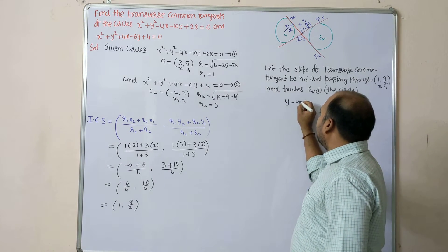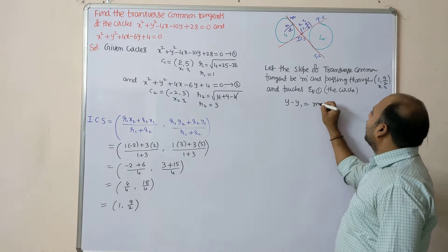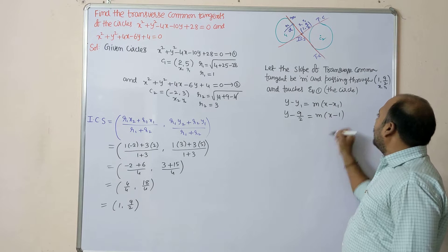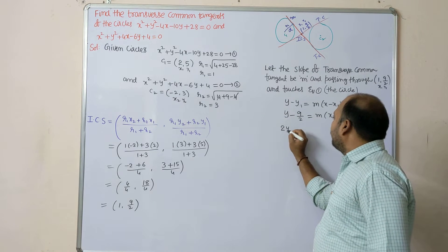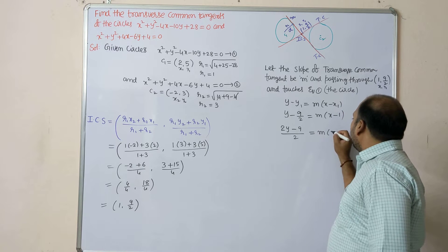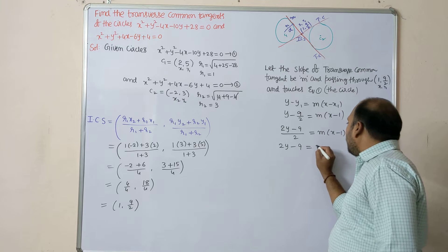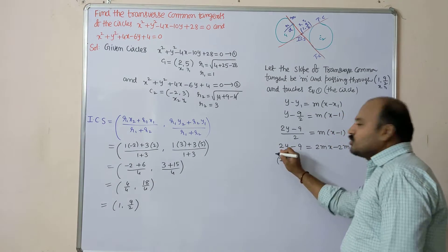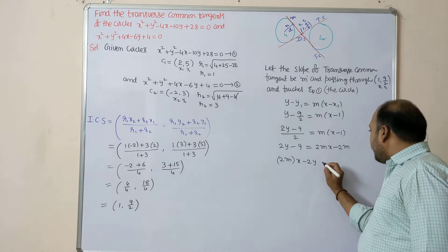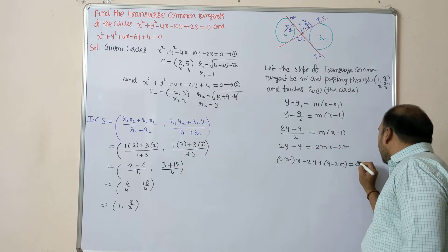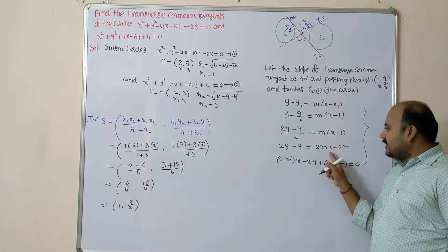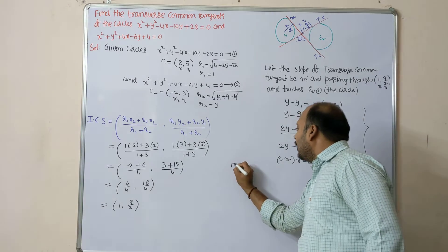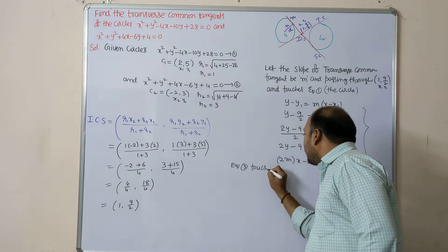The equation of the transverse common tangent: y - y1 = m(x - x1), so y - 9/2 = m(x - 1). Taking LCM: 2y - 9 = 2m(x - 1), which gives 2mx - 2y - 2m + 9 = 0. This is equation 3. Equation 3 touches equation 1.